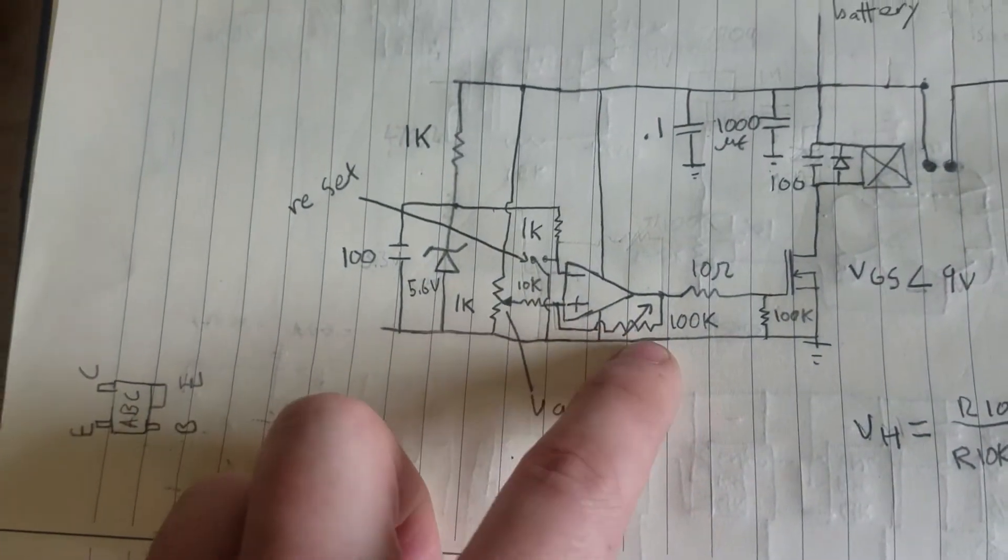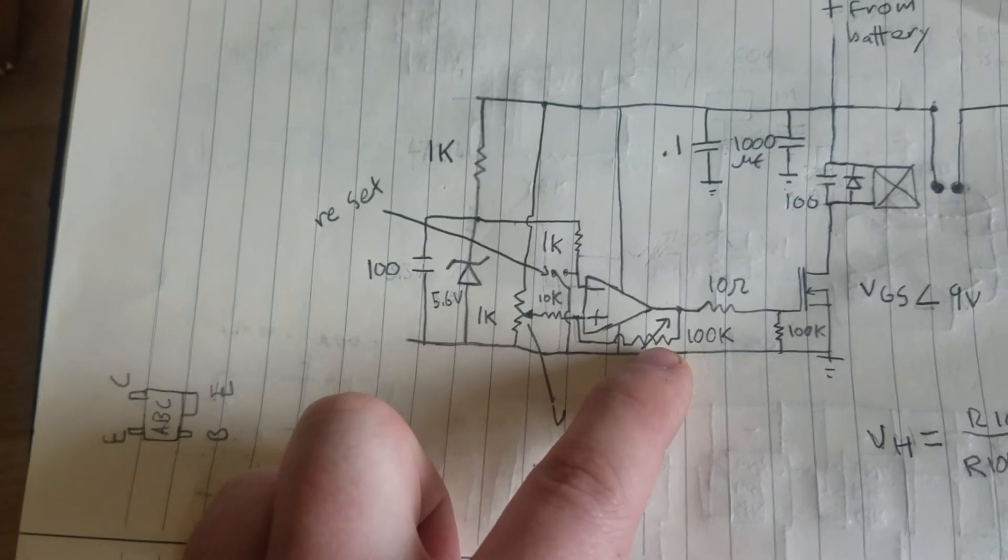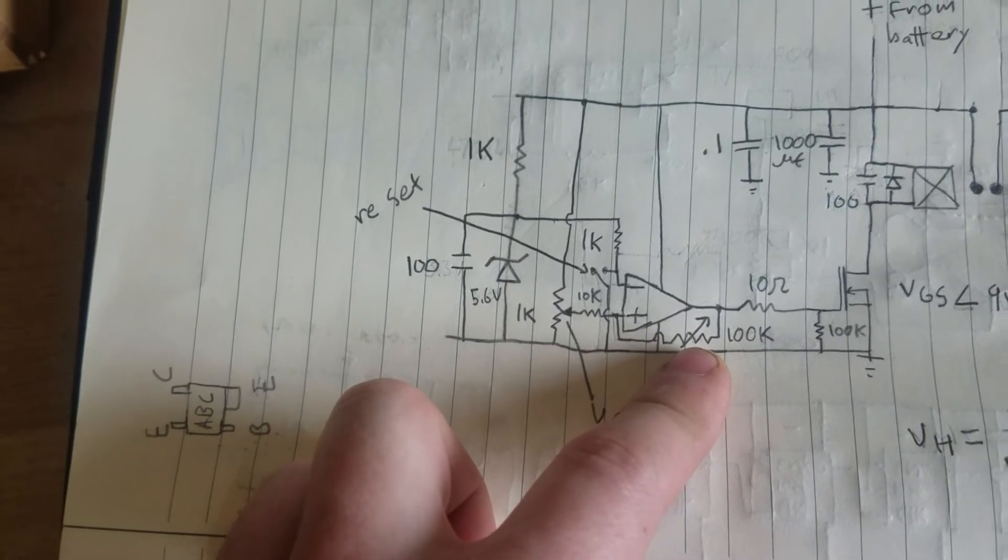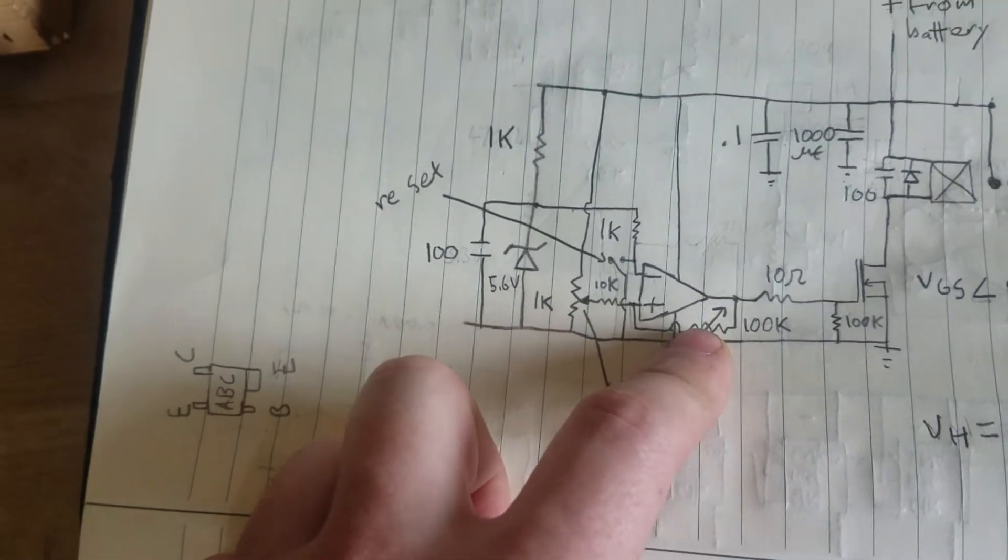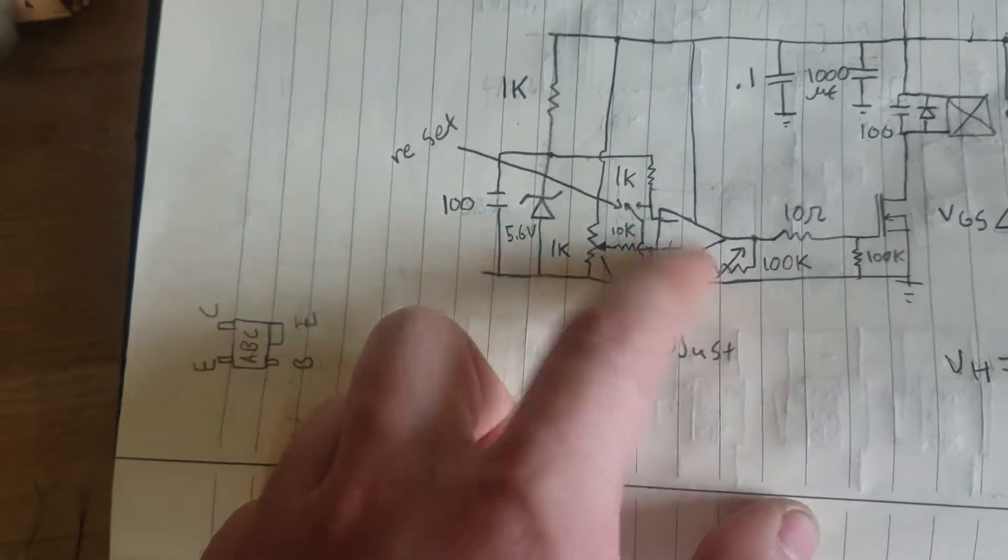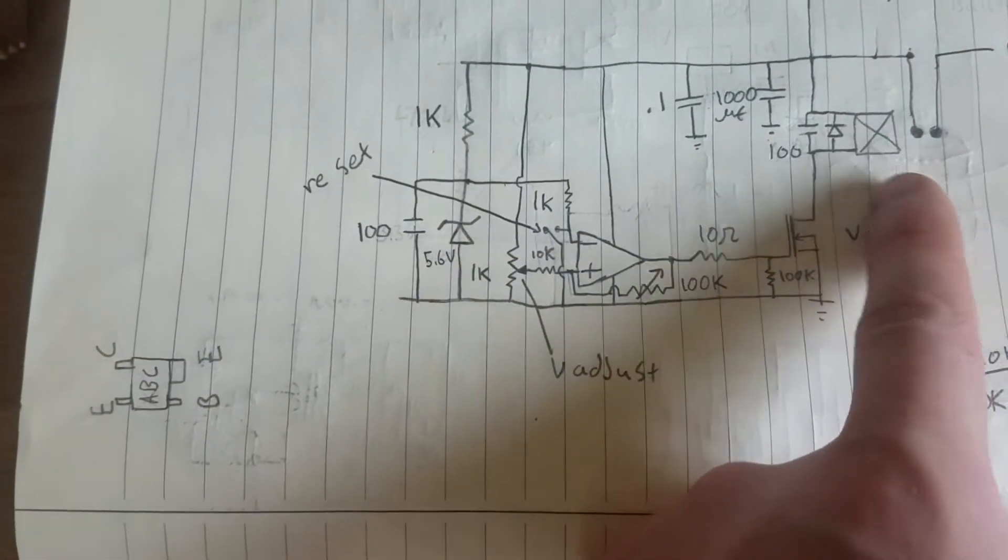And this right here, this is a hysteresis adjustment. This just makes it so that when the relay opens and the battery voltage, it will go up a few volts when it's not under load. This right here just makes sure that when the voltage increases from the battery, it won't trigger again and make the relay cycle on and off rapidly.